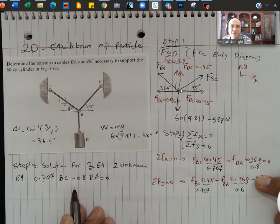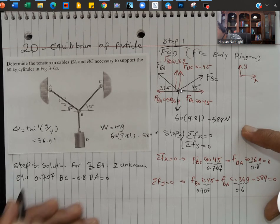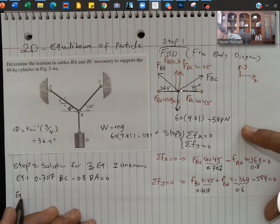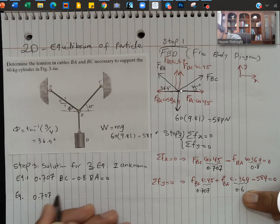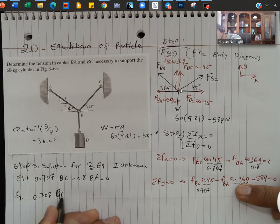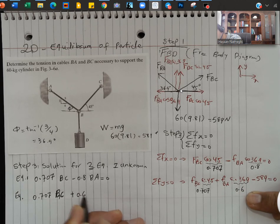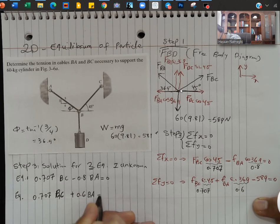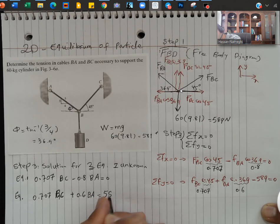Remember, you can keep the F, but to carry it will be lots of things to carry. So equation 2, I have 0.707 FBC or I simply shorten it to BC, plus 0.6 BA is equal to—I bring the 589 to the other side of the equation—I'm going to get 589.